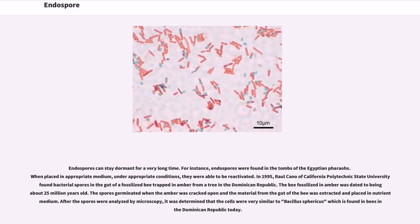In 1995, Raul Cano of California Polytechnic State University found bacterial spores in the gut of a fossilized bee trapped in amber from a tree in the Dominican Republic. The bee fossilized in amber was dated to being about 25 million years old. The spores germinated when the amber was cracked open and the material from the gut of the bee was extracted and placed in nutrient medium. After the spores were analyzed by microscopy, it was determined that the cells were very similar to Bacillus sphaericus which is found in bees in the Dominican Republic today.